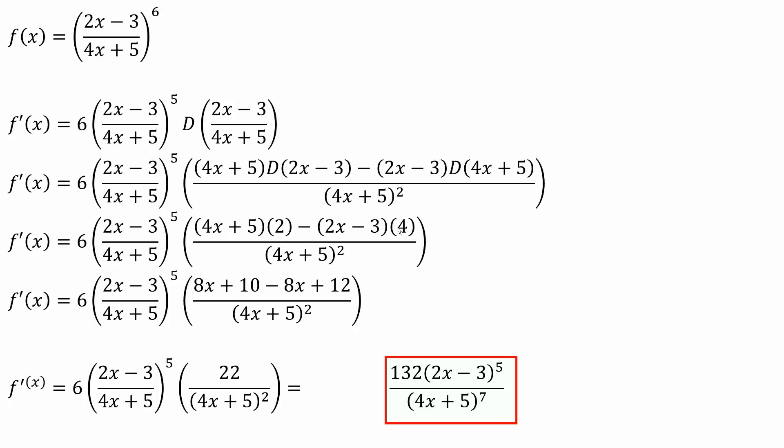Because 2x times 4 is negative 8x. Then we have negative times negative, so positive 3 times 4 is 12, positive 12. Now we can group: 8x minus 8x is 0x, and 10 plus 12 is 22.